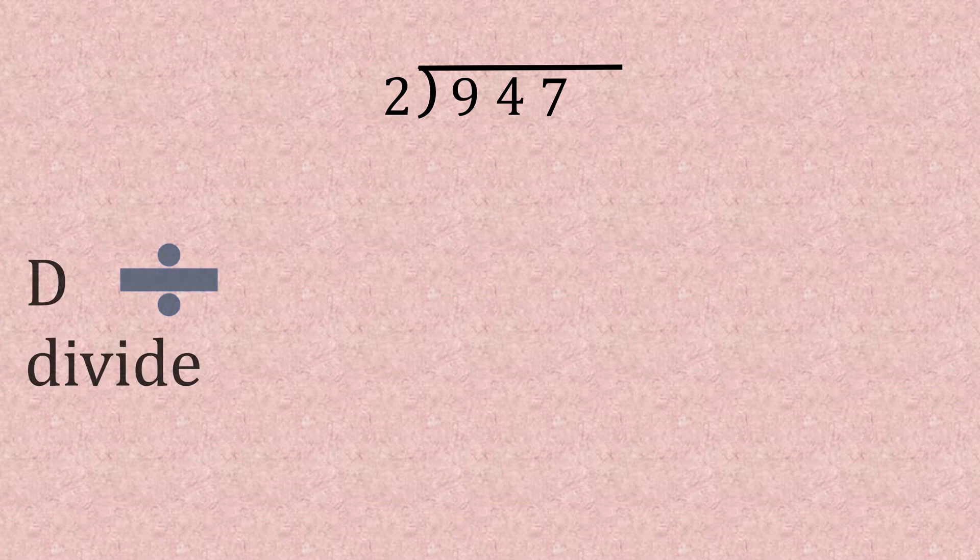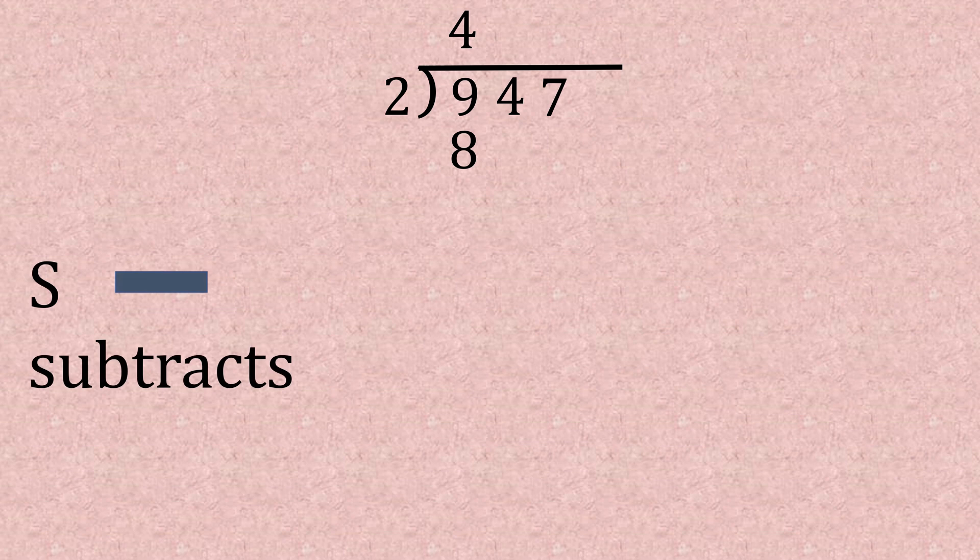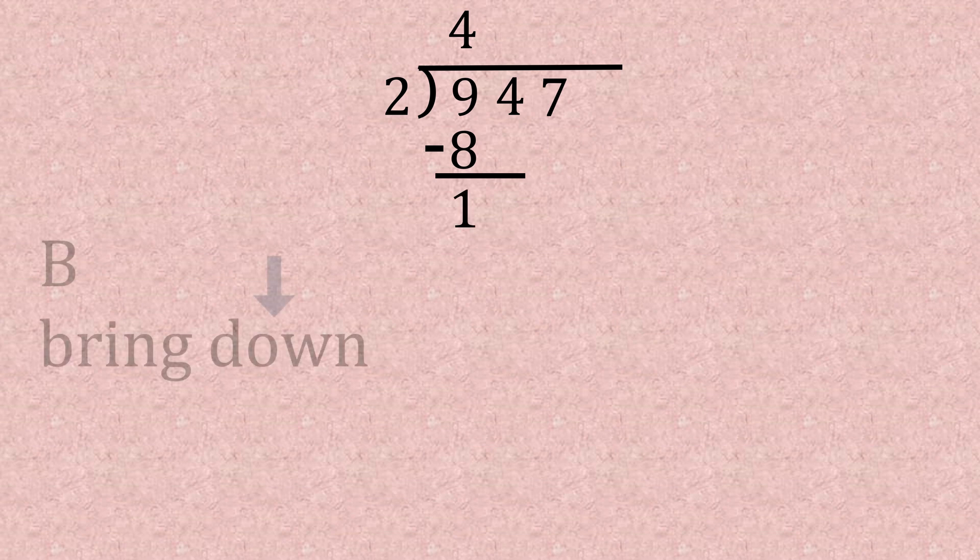So 947, we're going to start dividing by the 2, so that gives us 4. Next, multiply. 4 multiplied by 2, well that's 8, pop that down. Next, subtract. We take that away and we're left with 1. Then we've got B, bring down, giving us 14.